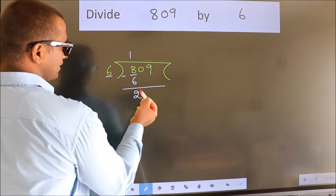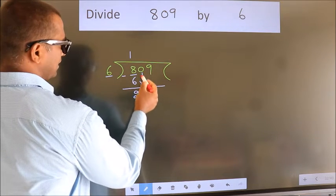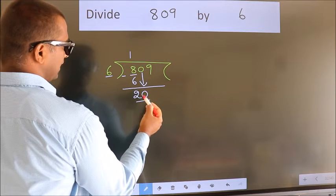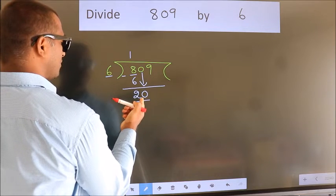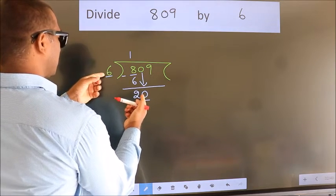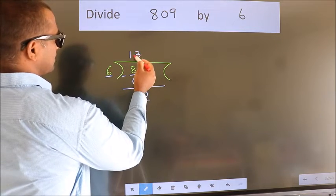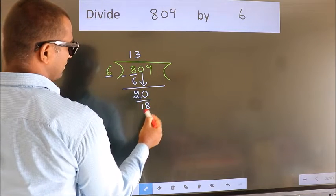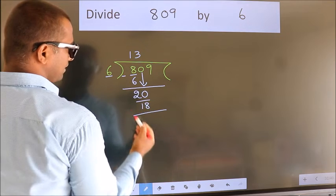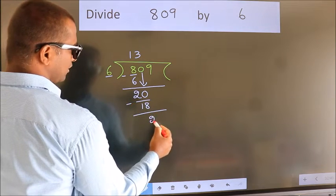After this, bring down the beside number. So 0 down. So 20. A number close to 20 in 6 table is 6 threes, 18. Now we subtract. We get 2.